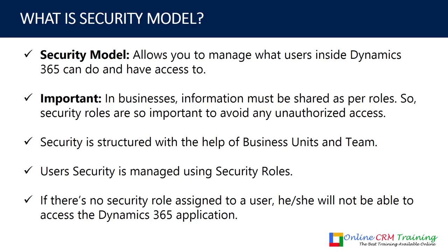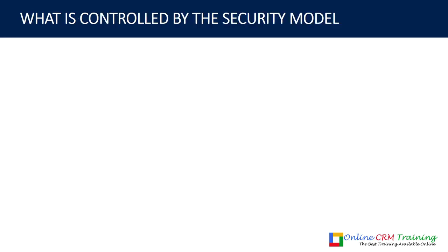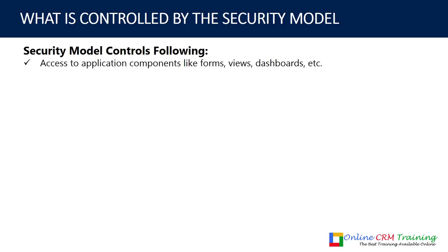Let's see what is controlled by the security model. Number one, the security model controls access to application components like forms, views, and dashboards. It also controls access to entities. Additionally, we can control access to records — for example, users in a business unit or department should only see their own records and not their team members' records, and that can be controlled through the security model.